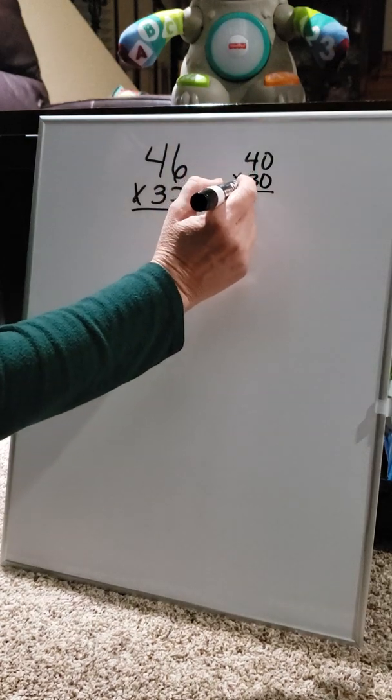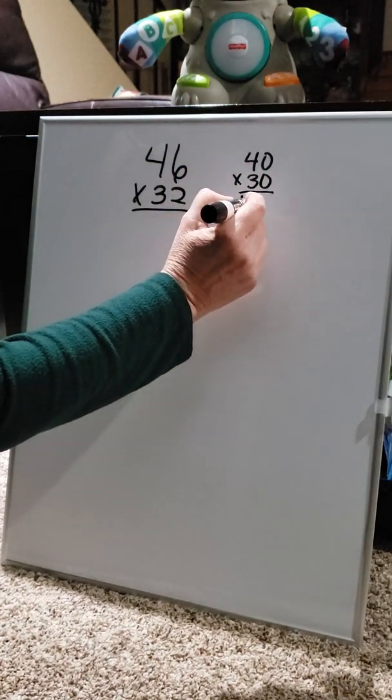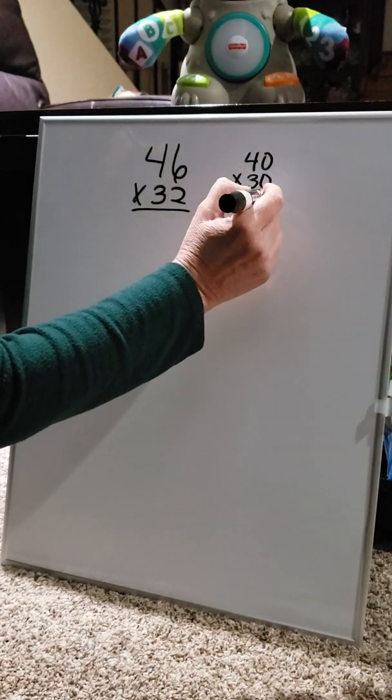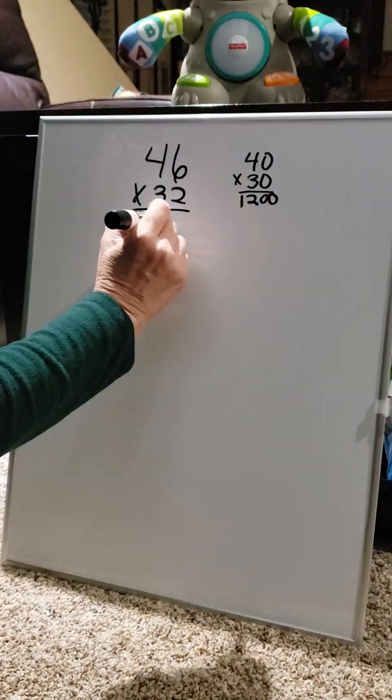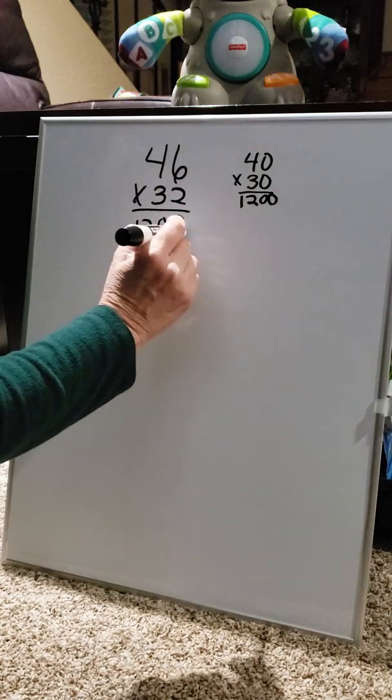Because 4 times 3 is 12, I'm just going to write that down. It's two zeros, making it nice and simple. It's 1,200. I'm going to write it again under the equation, 1,200.